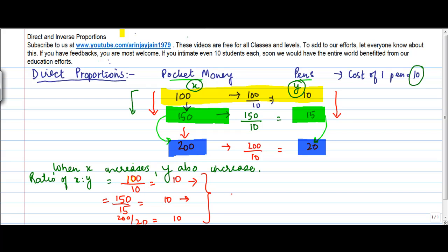So, in all these cases, the ratio of X and Y remain the same. So, when two variables, let's say X and Y, increase in such a manner that the ratio X upon Y is equal, then X and Y are said to be in direct proportion.